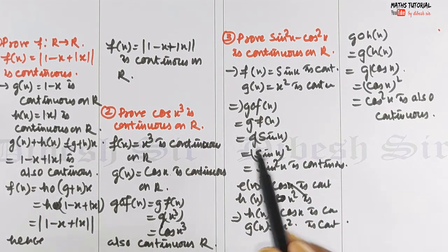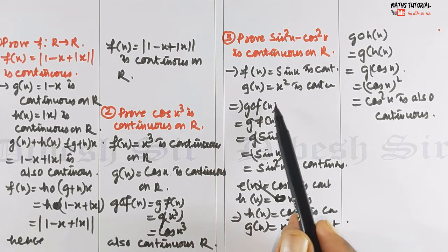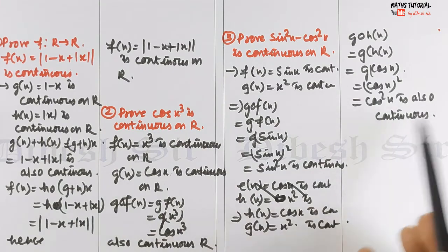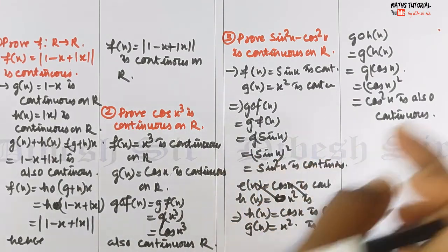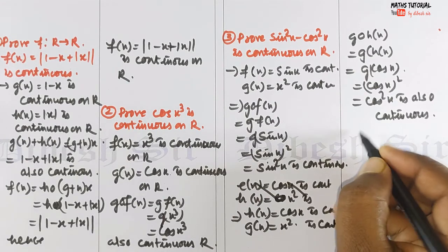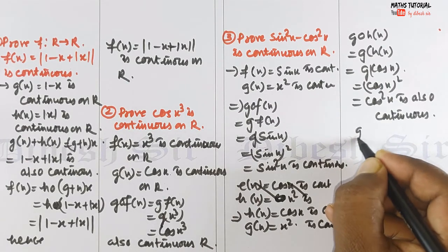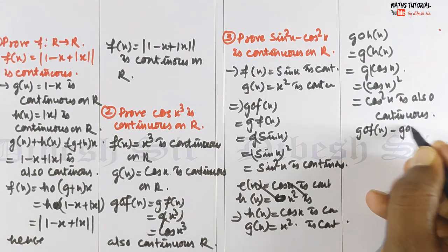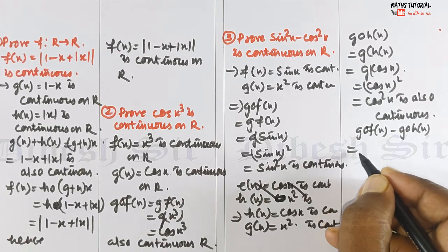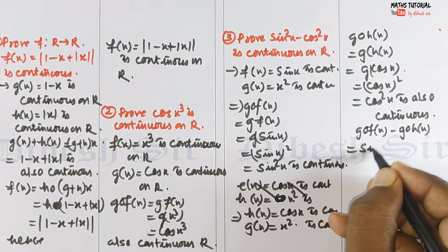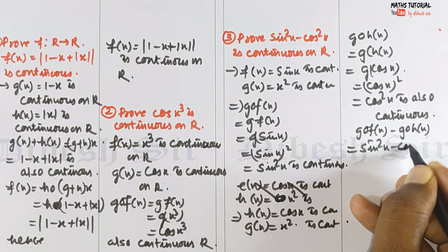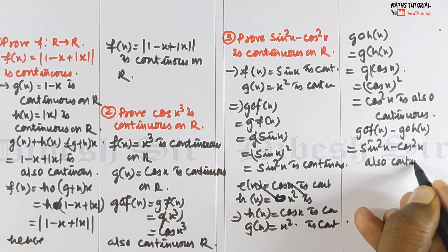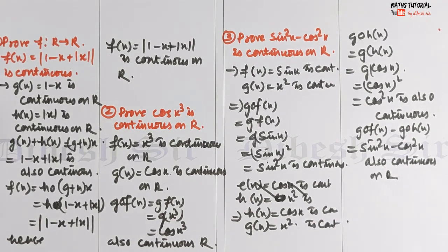Now we have shown that g(f(x)) = sin²x is continuous and g(h(x)) = cos²x is also continuous. Since both are continuous, their difference is also continuous. Therefore g(f(x)) - g(h(x)) = sin²x - cos²x is also continuous on R.